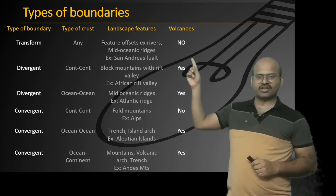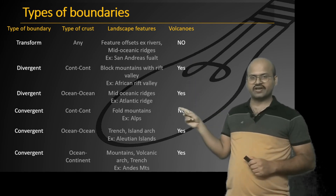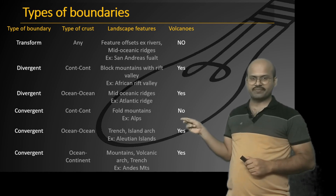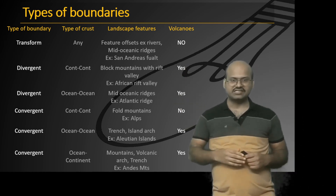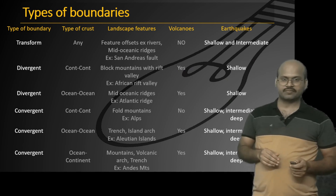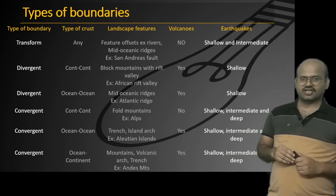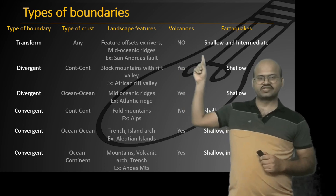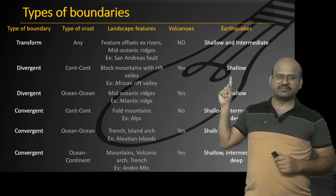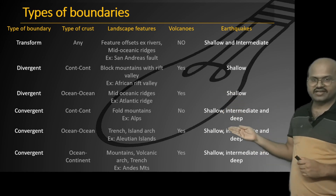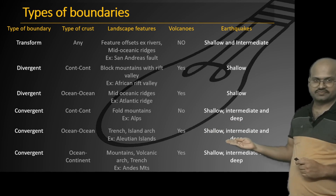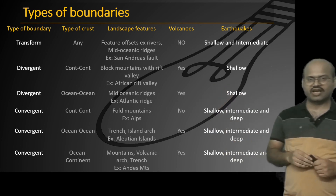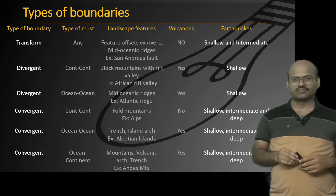Regarding volcanism: no volcanism occurs at transform boundaries, and no volcanism occurs at continent-continent convergent boundaries either. Some volcanism can occur at continent-continent divergent boundaries like the East African Rift Valley. Regarding earthquakes: at transform boundaries we see shallow to intermediate earthquakes; at divergent boundaries we see shallow earthquakes; and at convergent boundaries we see shallow, intermediate, and deep earthquakes. This table helps summarize what kind of earthquakes, volcanism, and landforms are formed at these boundaries.